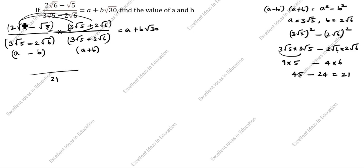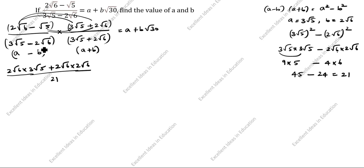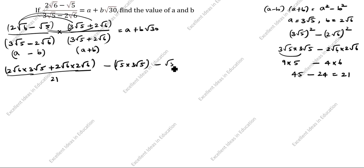Now we will multiply inside the bracket for the numerator. First: 2 root 6 into 3 root 5. Next: plus 2 root 6 into 2 root 6. Then: minus root 5 into 3 root 5. Next: minus root 5 into 2 root 6. All of this is divided by 21.